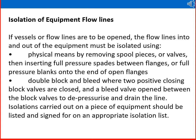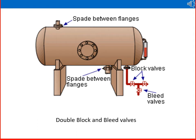For isolation of equipment flow lanes, if a vessel or flow lanes are to be opened, the flow lanes into and out of the equipment must be isolated using physical means: by removing spool pieces or valves, then inserting full pressure spades between flanges or full pressure blanks onto the end of open flanges; or using double block and bleed, where two positive closing block valves are closed and a bleed valve is opened between the block valves to depressurize and drain the line. All isolation carried out should be listed and signed for on an appropriate isolation list.